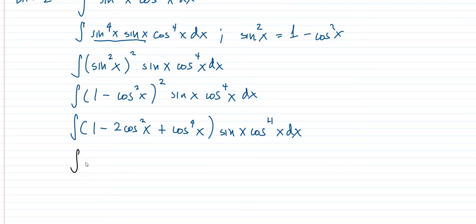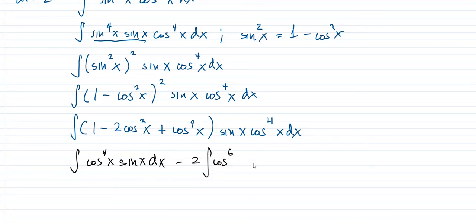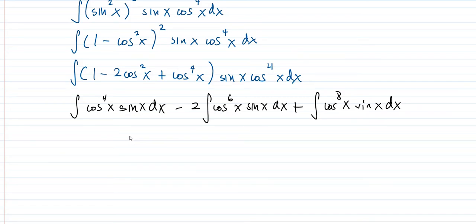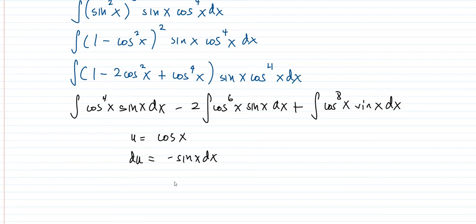Distributing, we get: the integral of cos⁴x · sin x dx, minus 2 times the integral of cos⁶x · sin x dx, plus the integral of cos⁸x · sin x dx. For all three terms, u is always cosine, and the varying part is the exponent n. The differential u is always negative sine x dx — the differential of cosine x — and we have sine x dx in each term.